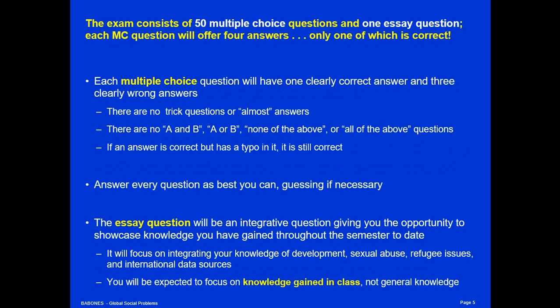The exam consists of 50 multiple choice questions and one essay question. Each multiple choice question will have four answers, only one of which is correct. I ask very straightforward multiple choice questions — there are no tricky questions, no almost answers, no 'A and/or B' combinations. All you'll get are simple questions with four possible answers, one clearly correct and three completely wrong. One right answer, three wrong answers. If you can recognize the right answer, you win. Answer every question as best you can; guess if you have to because there's no penalty for guessing. You have to answer every question.